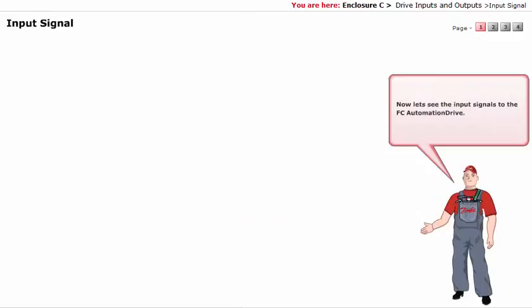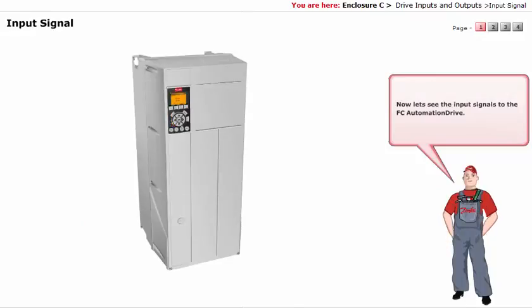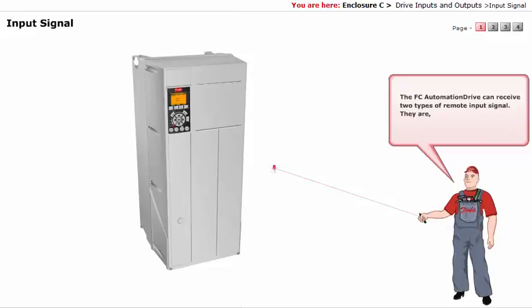Now let's see the input signals to the FC automation drive. The FC automation drive can receive two types of remote input signal. They are digital signal and analog signal.